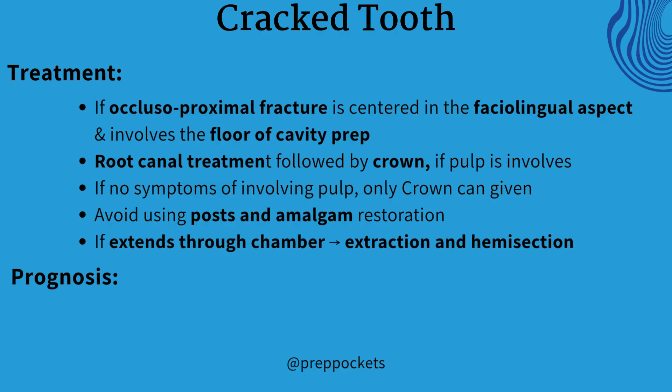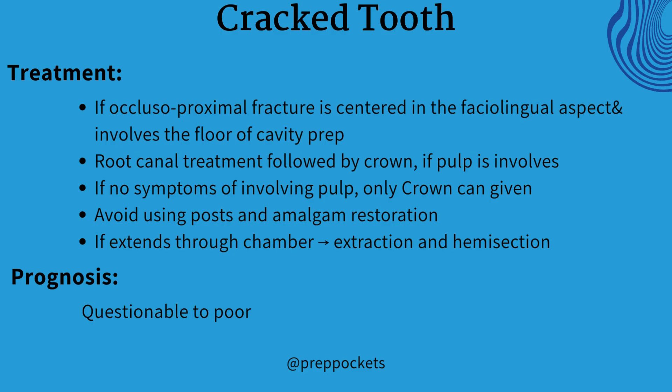Treatment is indicated when there is an occlusoproximal fracture centered in the faciolingual aspect involving the floor of the cavity prep. Root canal treatment is done, followed by a crown. Avoid using metal posts and amalgam restorations. If the fracture extends through the pulp chamber, extract that tooth and replace it — or another option could be hemisectioning. The cracked tooth shows a questionable to poor prognosis.